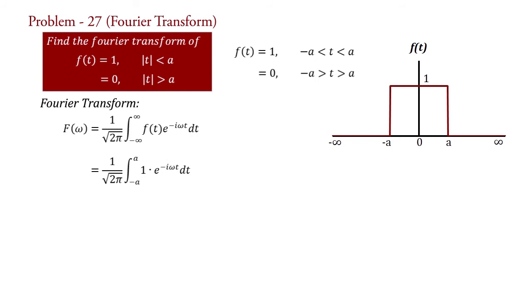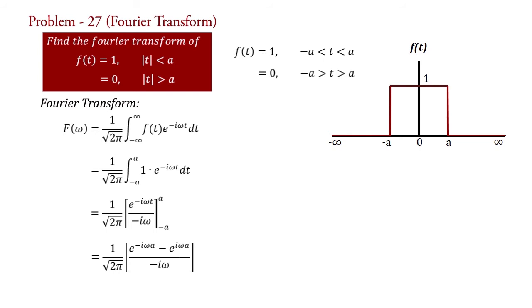Integrating, we get F(ω) = 1/√(2π) · [e^(−iωt) / (−iω)] evaluated from −a to a. Putting in the limits: F(ω) = 1/√(2π) · [e^(−iωa) − e^(iωa)] / (−iω).